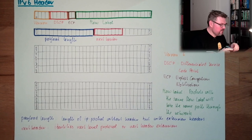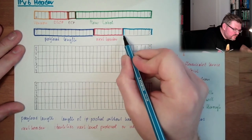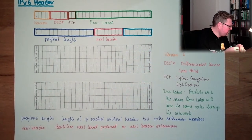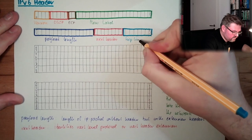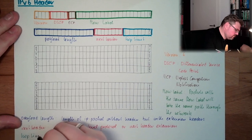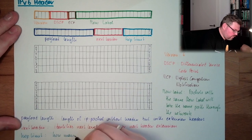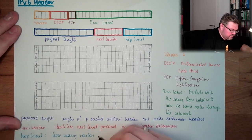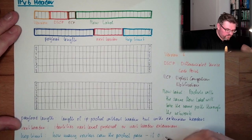And then there is something. The hop limit, this is no longer called time to live, this is the hop limit. How many routers can the packet pass? Each router will reduce by 1, if 0, the packet will be dropped.